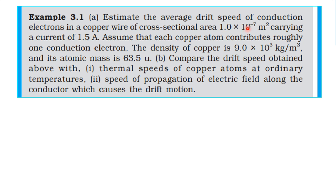Area of cross-section is 10⁻⁷ meter square. Current is 1.5 ampere. Density of copper substance is 9 × 10³. Each copper atom contributes one conduction electron, that is one free electron. Atomic mass of copper is 63.5.